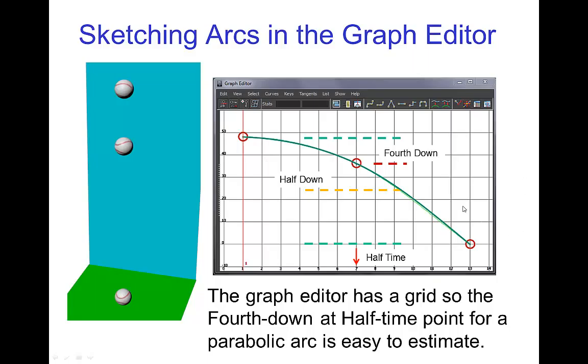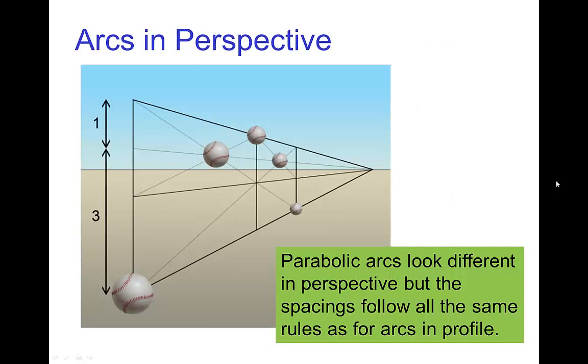If we want to do a ball bounce, then we just duplicate this arc on each side. And that's the ball bounce. Now parabolic arcs in perspective are a little bit more complicated, but it's the same procedure.